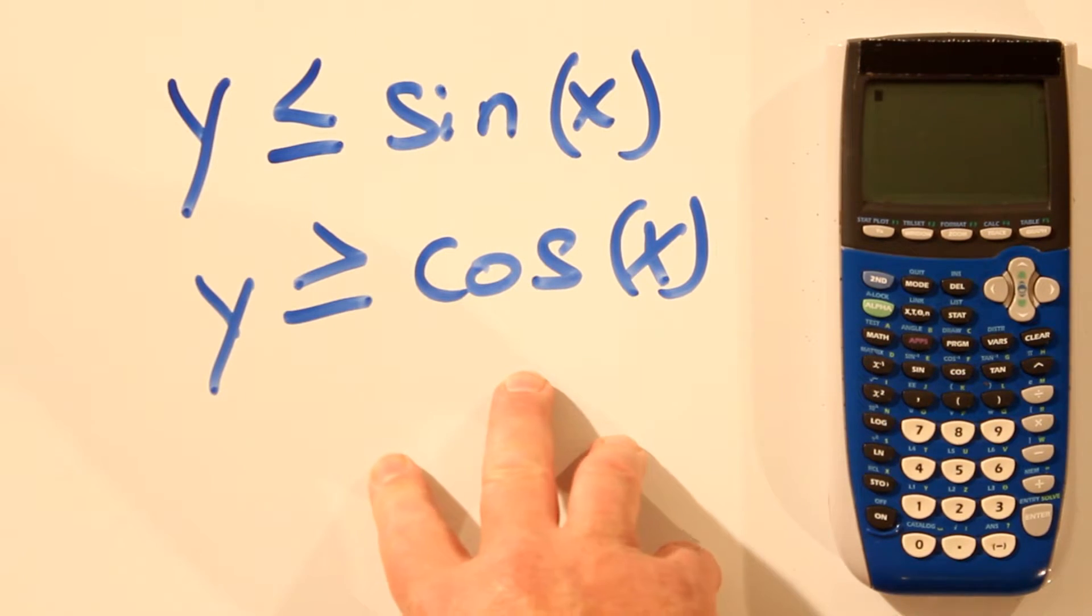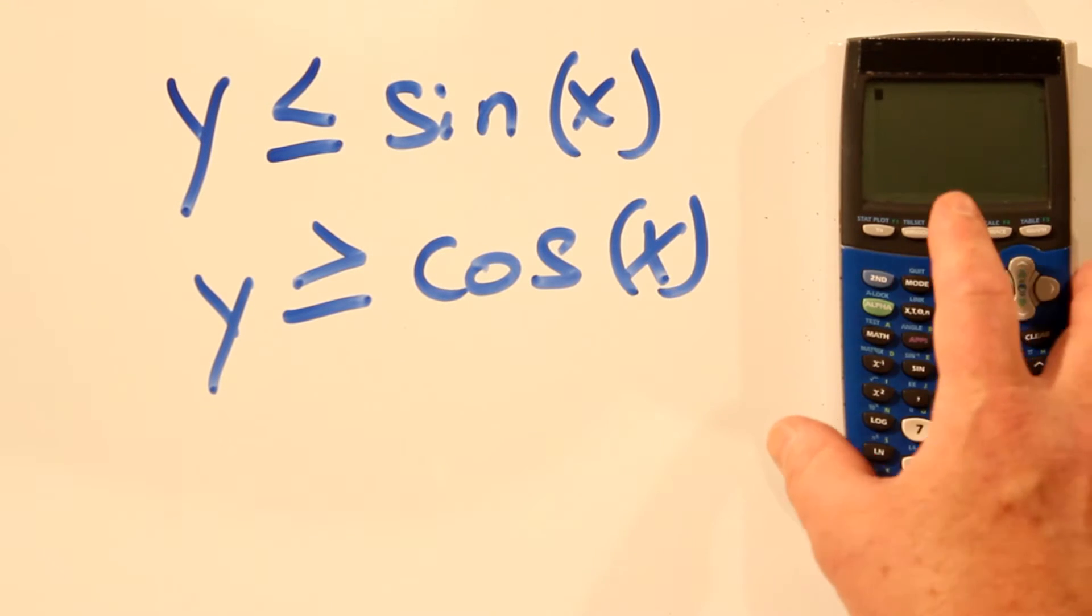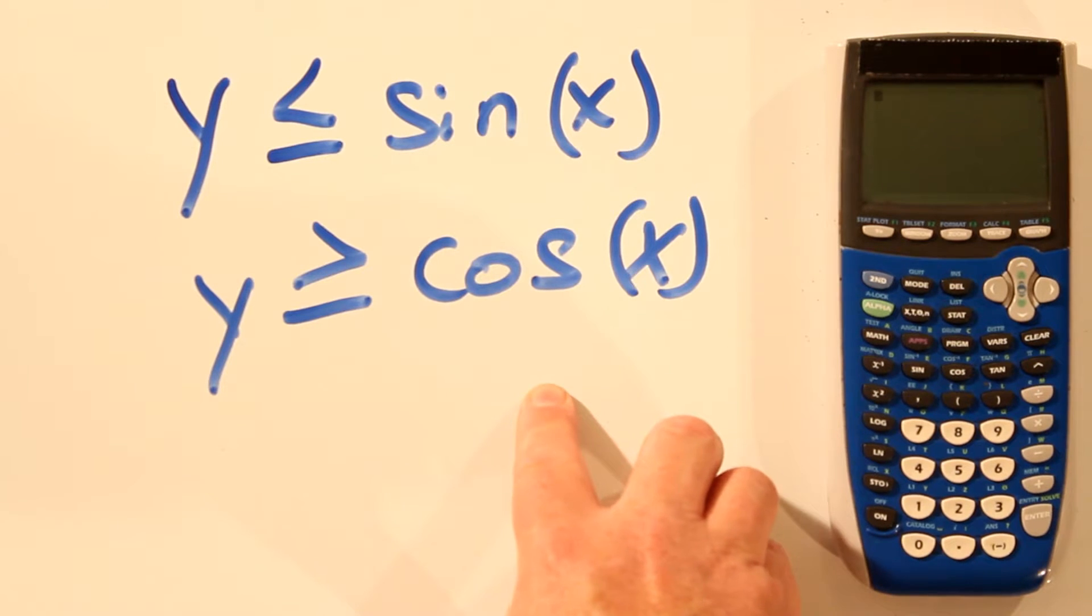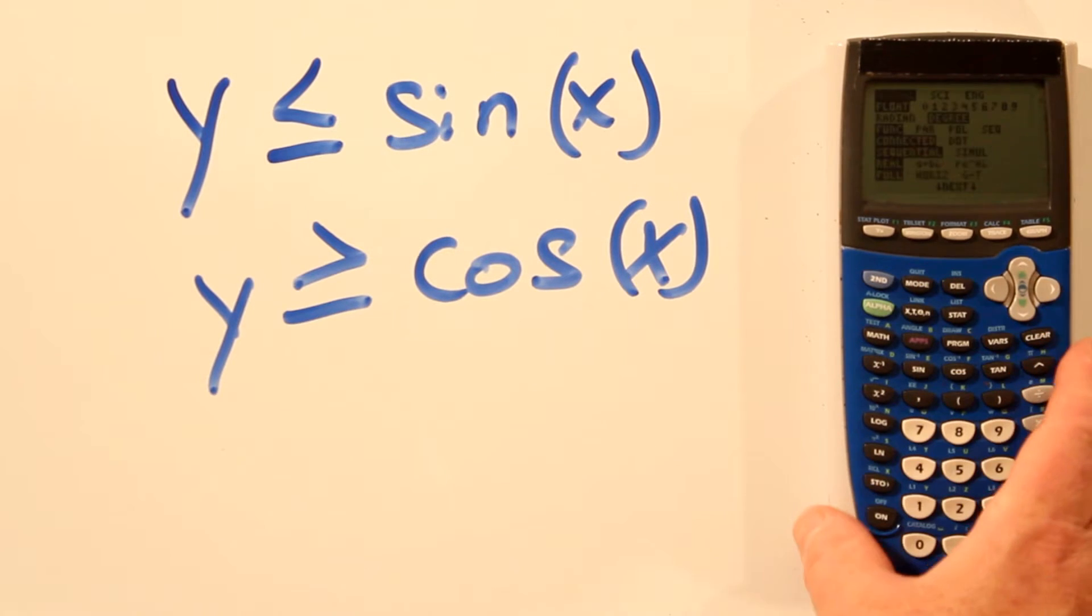This also works for trig functions or for any function. If we wanted to plot y less than or equal to sin x and y greater than or equal to cos x. First, let's check to see what mode we're in.